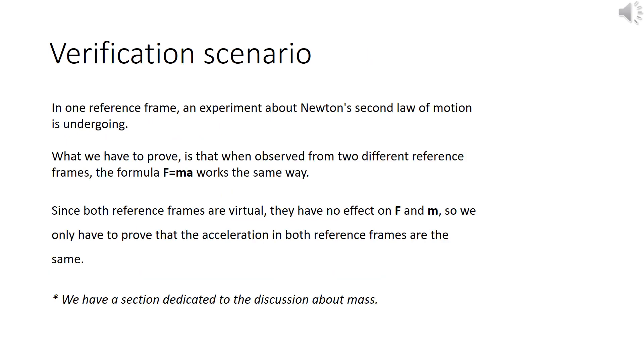Here are the settings for the verification scenario. In one reference frame, an experiment about Newton's second law of motion is undergoing. What we have to prove is that when observed from two different reference frames, the formula F=ma works the same way.